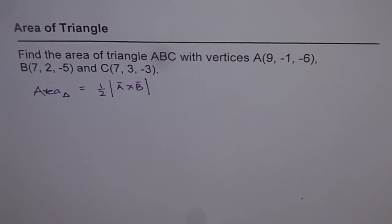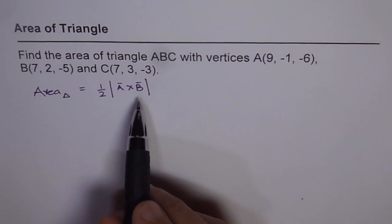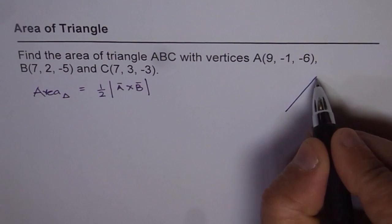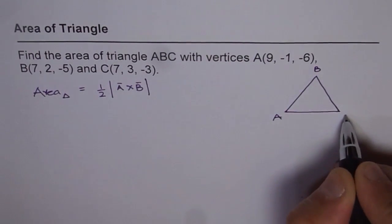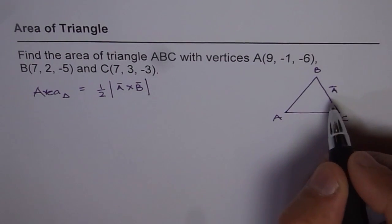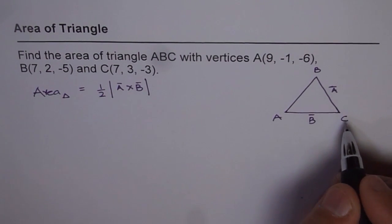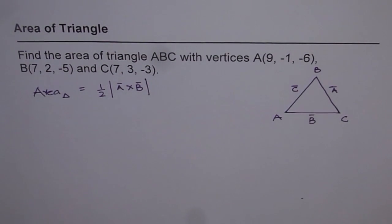Now here, A is the side opposite to vertex A, that means side BC. And B is the side opposite to vertex B. So let me just make this triangle once here and tell you what I am trying to say. Let's say this is A, B, and C.